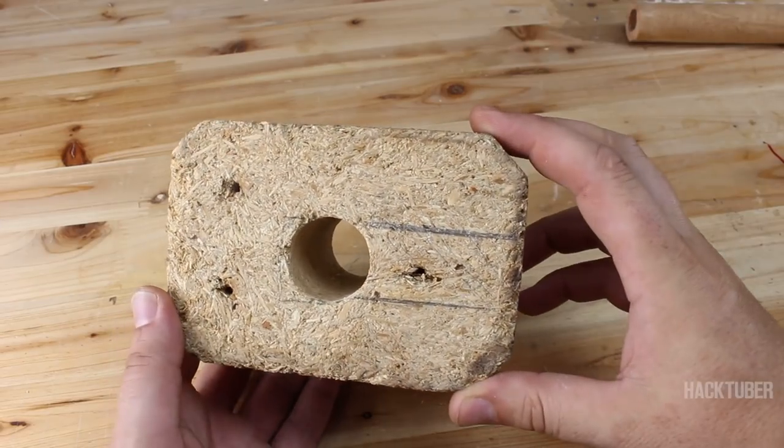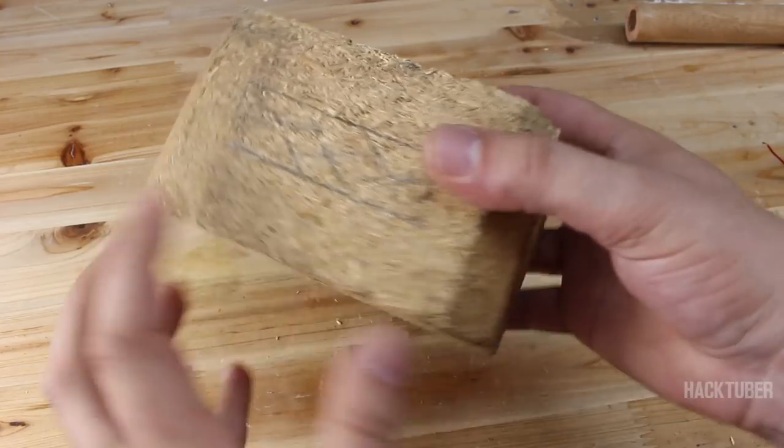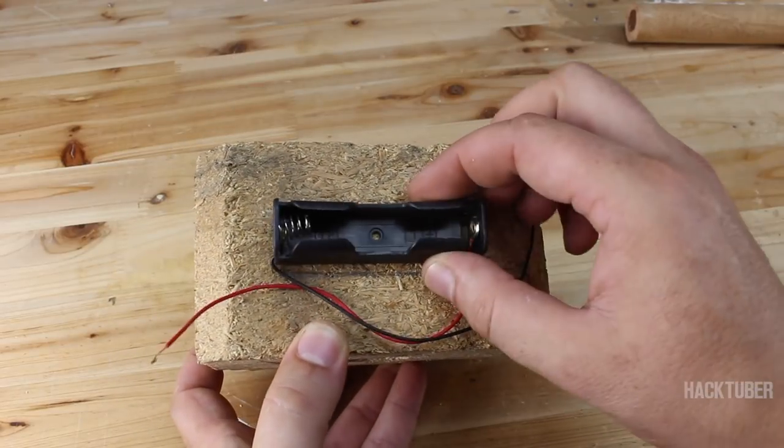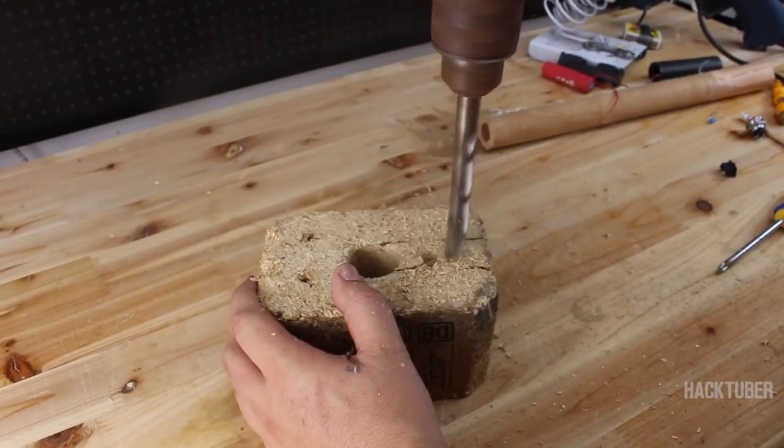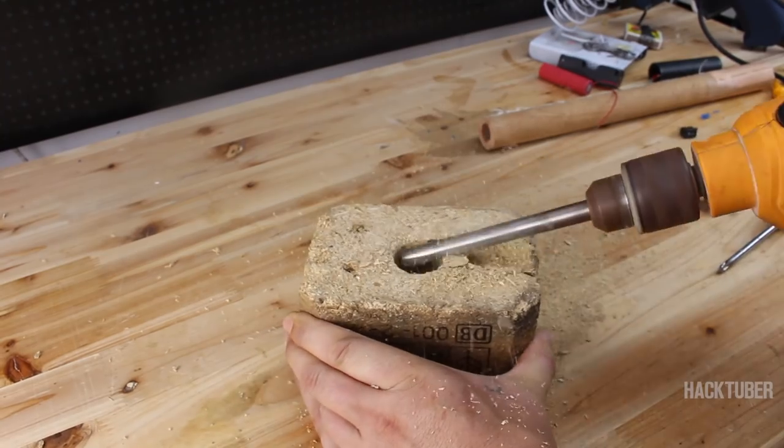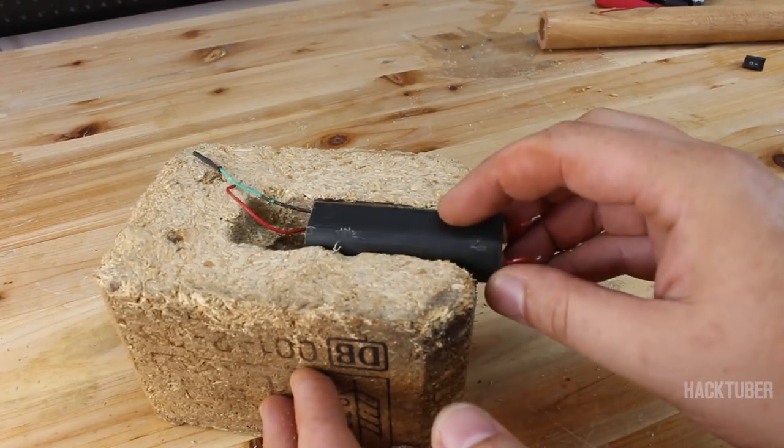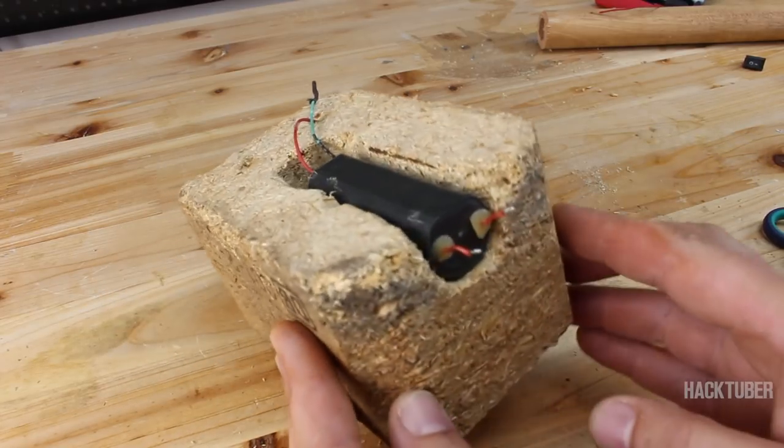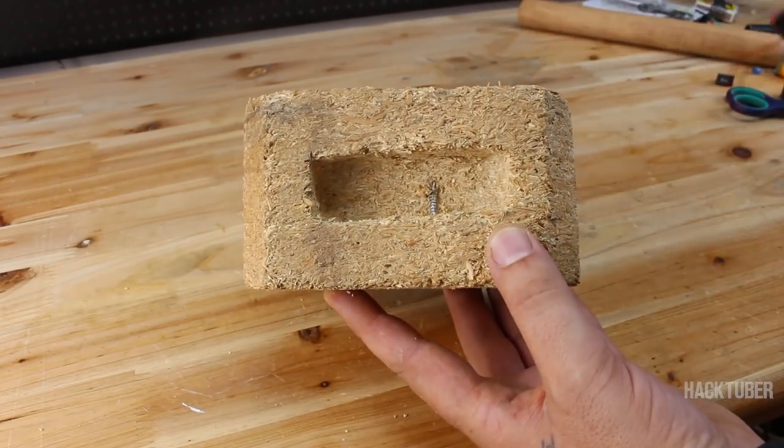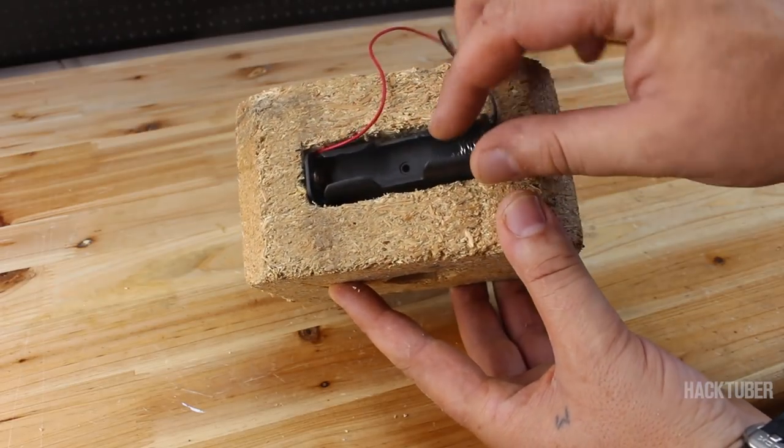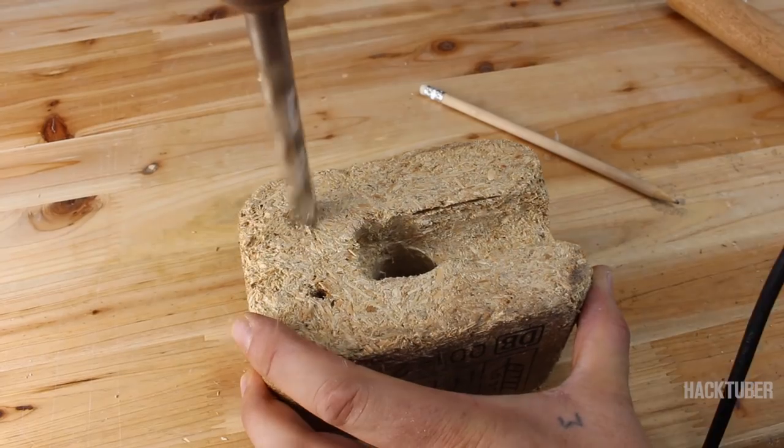On this wooden piece we're gonna make some cuts for fitting the ignition coil. From this side we're gonna make a hole for the battery holder.